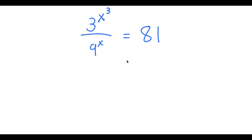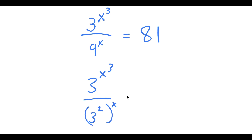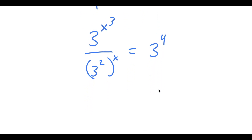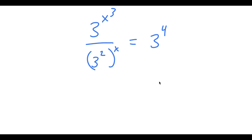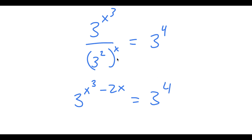In this problem, I have 3 to the power of x to the power of 3 over 9 to the power of x is equal to 81. I'm going to first write 9 to the power of x as 3 squared to the power of x, and write 81 as 3 to the power of 4. This is the same thing as 3 to the power of x cubed minus 2x is equal to 3 to the power of 4, because 3 to the power of 2 to the power of x equals 3 to the power of 2x.